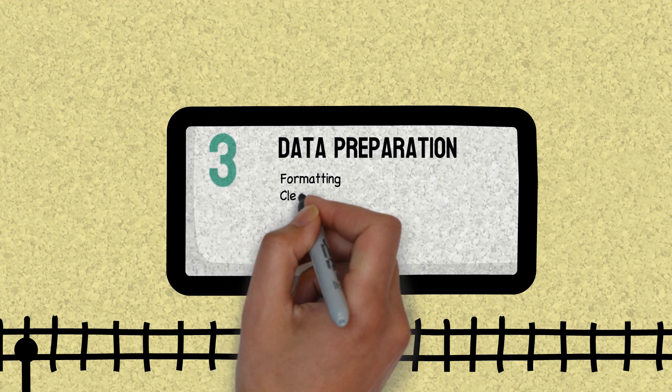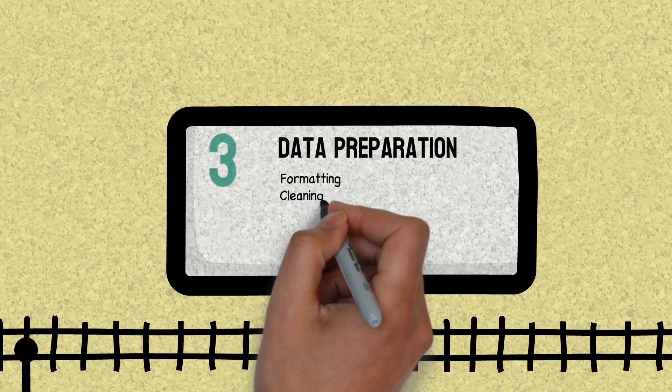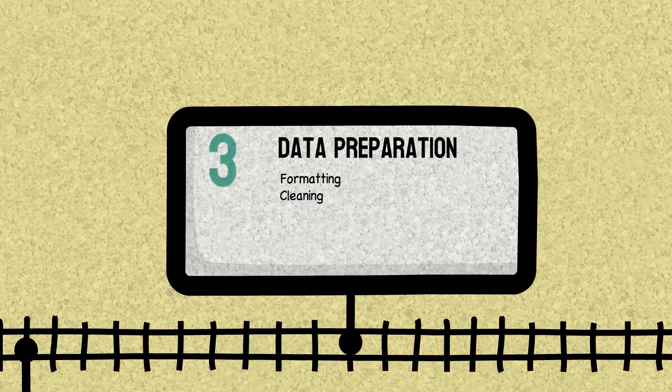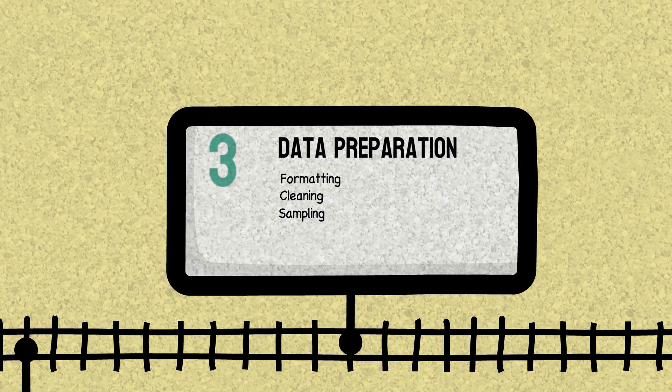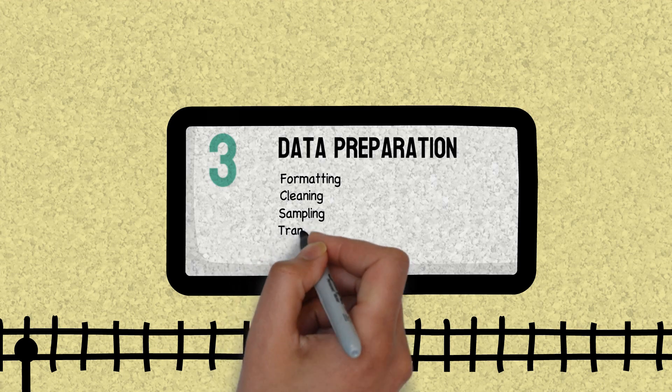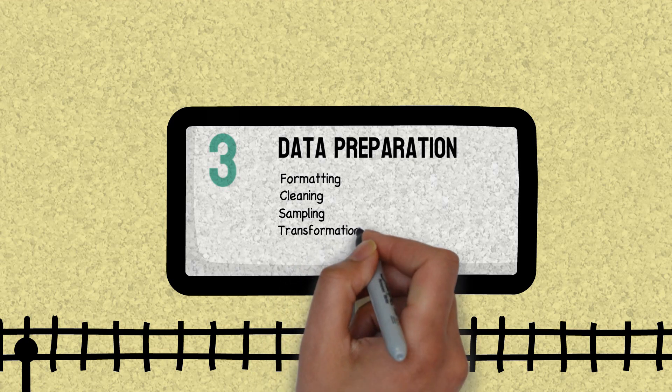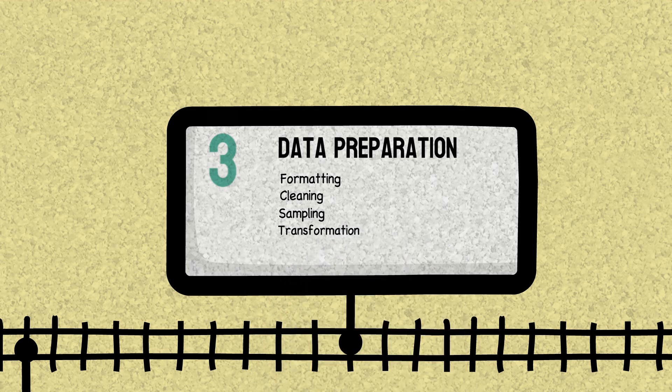After formatting we need to clean our data. Some of the processes involved are finding corrupt, incorrect or irrelevant records or identifying the duplicate records that we don't need. Then comes the sampling part where we acquire a sample out of a population and do a statistical test to check the significance of the sample.